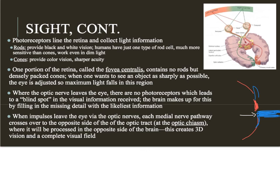As information travels down the optic nerve, it reaches the optic chiasma. Information from different sides of our vision — the left side and right side of our visual field — travel on different parts of the optic nerve. They combine at the optic chiasma and get processed in their entirety on both sides of the occipital lobe, giving us one complete, high-quality 3D image. That concludes our brief look at hearing, equilibrium, and sight.